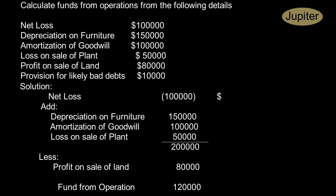From net profit or net loss, if we are to arrive at fund from operation from sales, we would have considered provision for likely bad debts. We would have deducted it from sales.